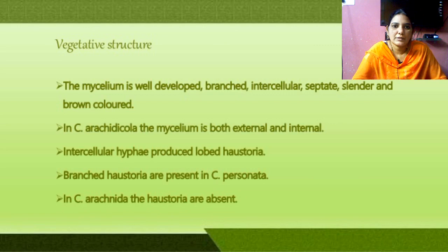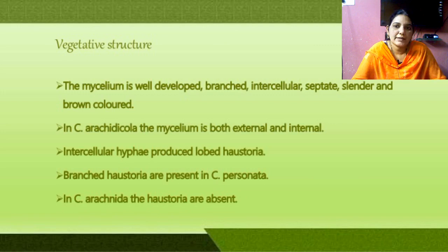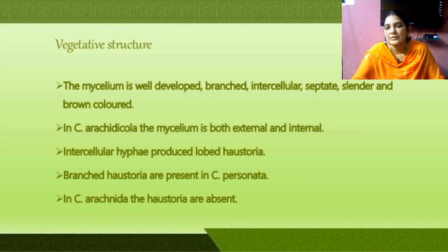Coming to the vegetative structure of Cercospora: the mycelium develops especially in leaves. They enter into the host cell and produce a germination tube, then form mycelium. The mycelium produces haustoria, which absorbs the food material and helps to develop the mycelium. This is a parasite.